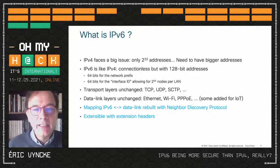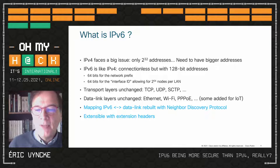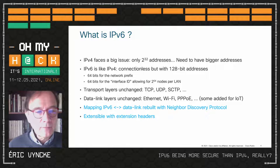Good news: all transport layers are unchanged — the same TCP, the same UDP. Data link layers are also unchanged: Ethernet, Wi-Fi, PPP. In the IoT world they have ported IPv6 for instance on LoRa or 6LoWPAN, but only IPv6, not IPv4.